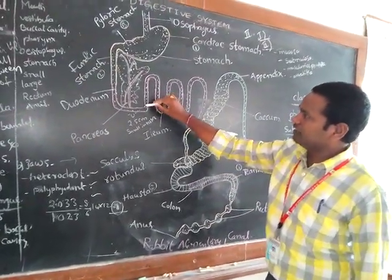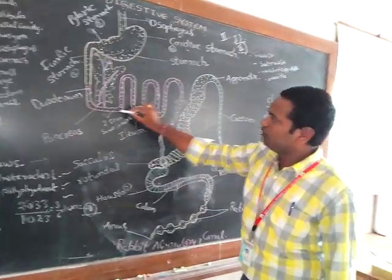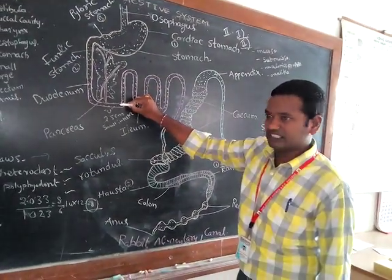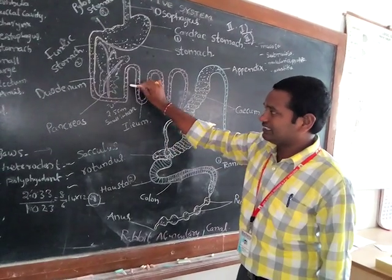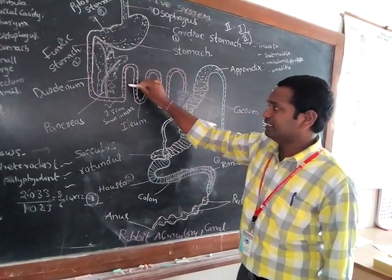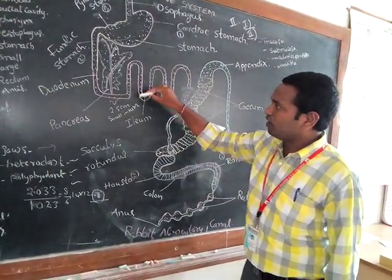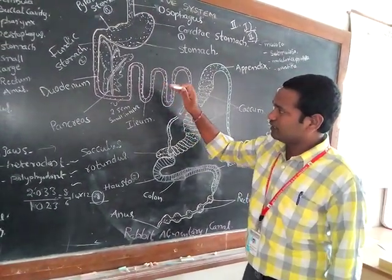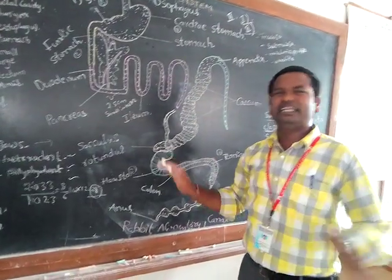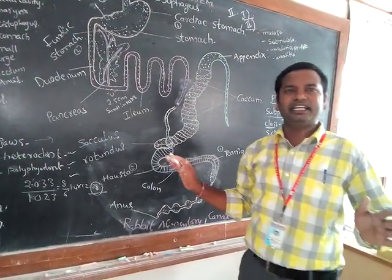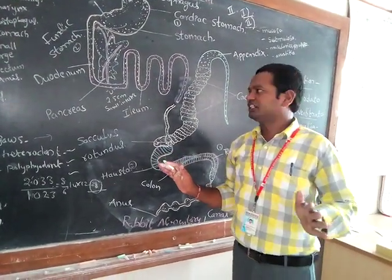Next is the small intestine. The small intestine is a U-shaped structure, approximately 2.5 meters long. Total digestion is completed in the small intestine.